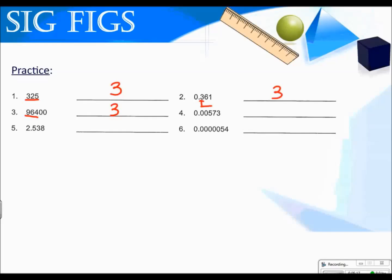For number four, we start at the first real digit — meaning a non-zero — and count to the right: three significant figures. For number five, none of these are zeros, so they're all significant. And for number six, the leading zeros don't count. We start with the five and go to the right, so we have two significant figures. The more practice you do with sig figs, the better you get.